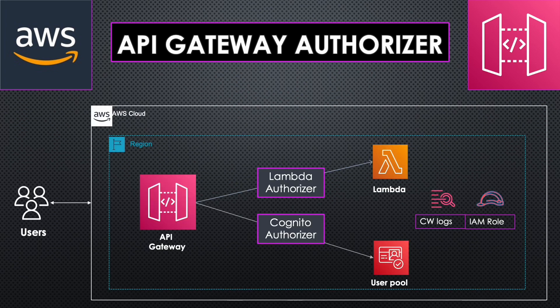This is what we are going to build today. There are two types of authorizers: Lambda and Cognito authorizer. For the Lambda authorizer we are going to create a Lambda function and attach it to the API Gateway method, and for the Cognito authorizer we are going to create a user pool and use that to control the access. Both involve a series of steps.